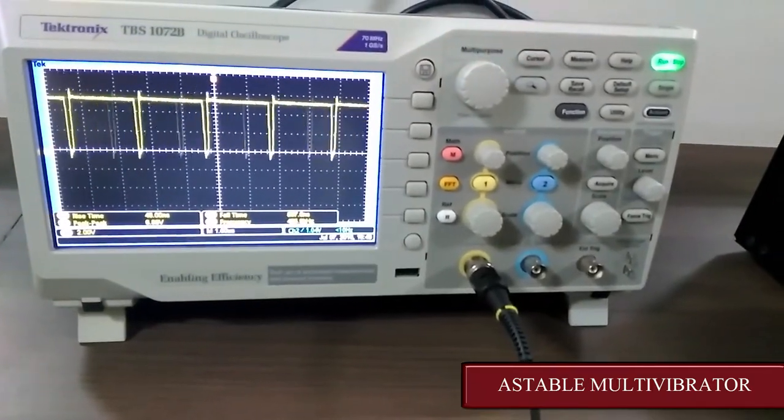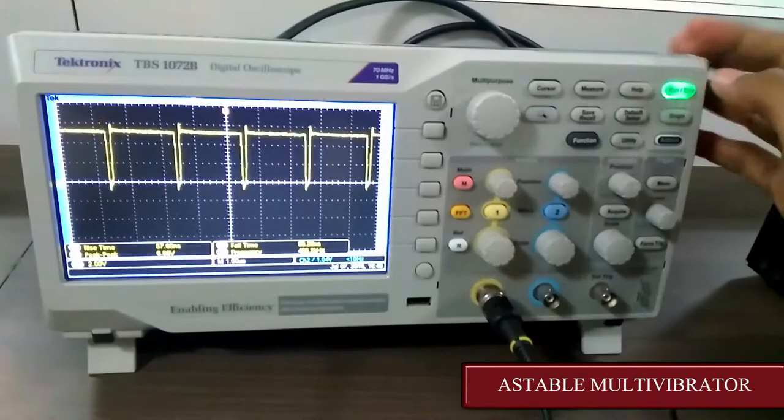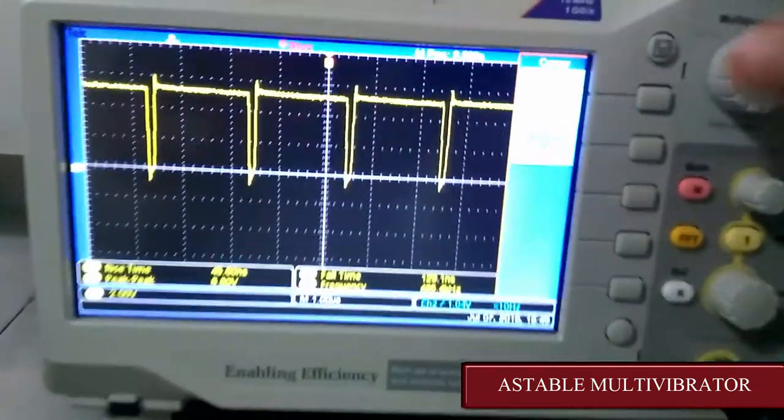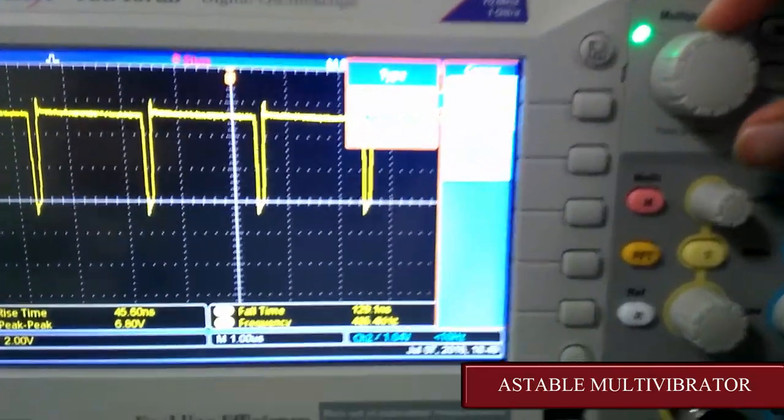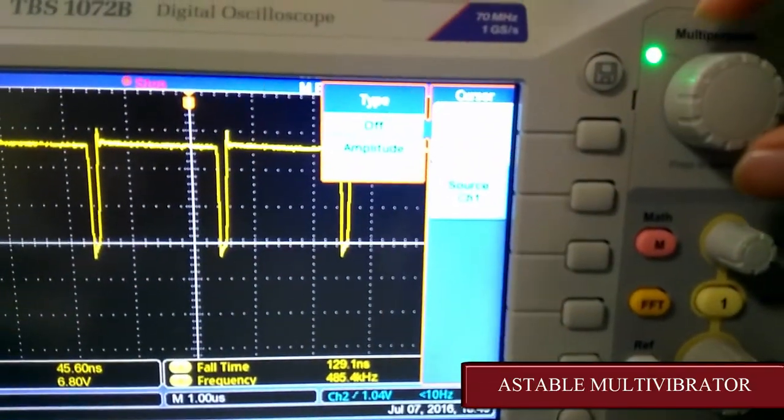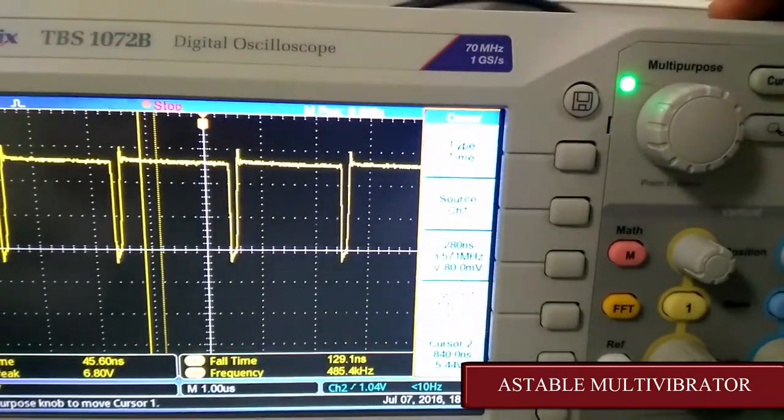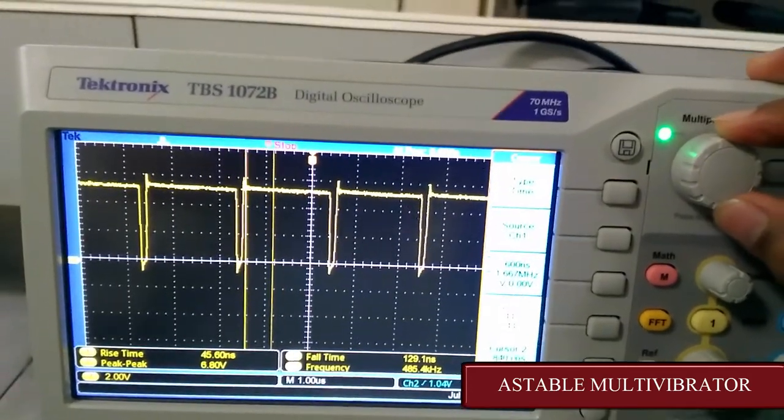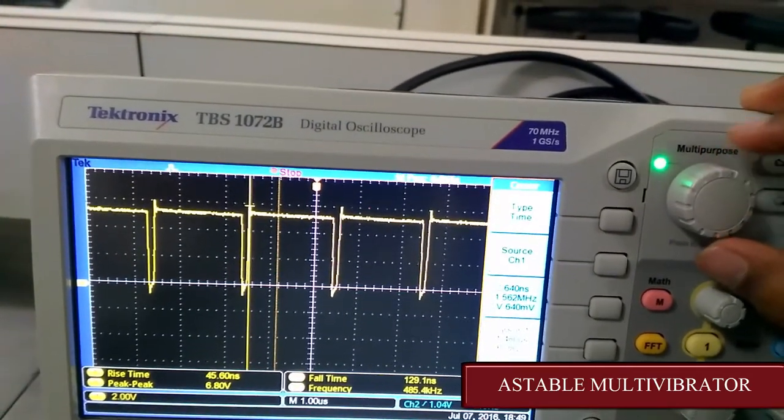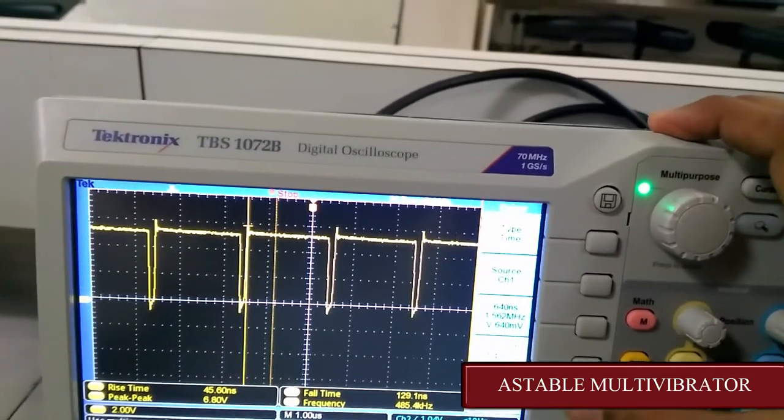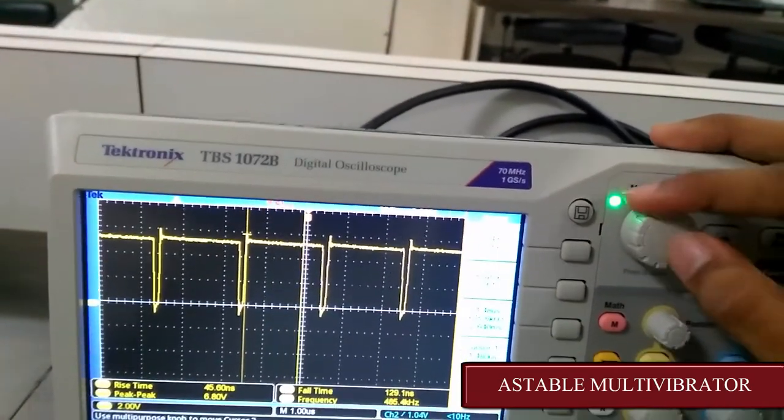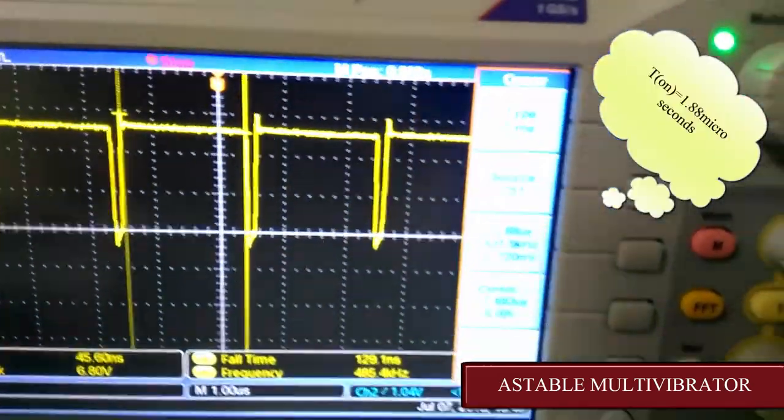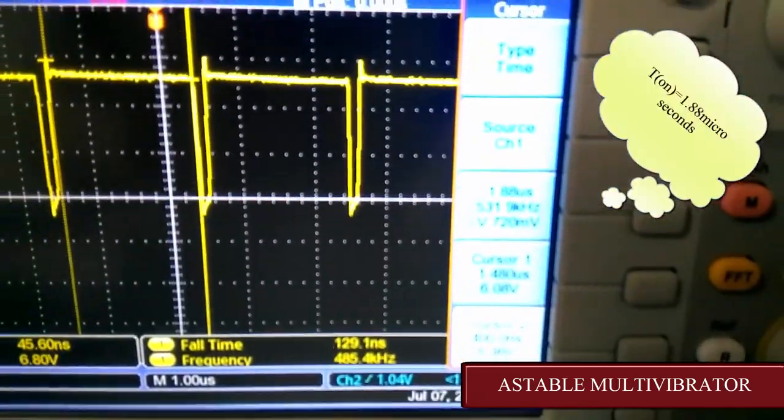Now let's calculate the t-on and t-off. For that, we will first stop this. Then cursor, and then type should be changed to time. Now there are two cursors. Set the first cursor at the beginning of t-on and the second cursor at the end of t-on. Now here we can note that the t-on time is 1.88 microseconds.